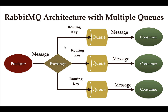Let me explain with an example. Consider we have multiple queues — Q1, Q2, Q3. Whenever the producer wants to send a message to Q3, it sends the message along with a routing key to the exchange. The exchange then uses that routing key to identify which queue the message should be routed to. For example, with routing key 3, the exchange will send that message to Q3.